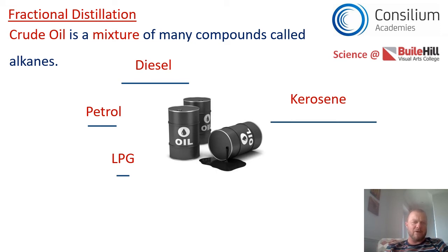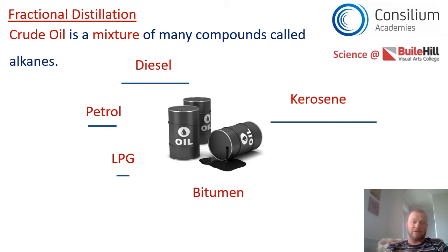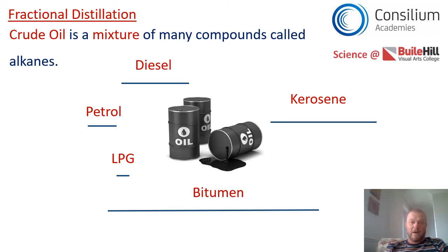The final everyday name we need to know is bitumen — that horrible black tar substance used to fix a roof or make a road. Bitumen is around C40 to C45. That chain length is really important when we're talking about how to separate them, because you can't put your hand in the oil and pick out bitumen or petrol — it can't be separated that way. So there has to be a chemical process, and that's what fractional distillation is.